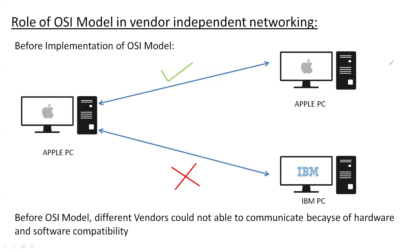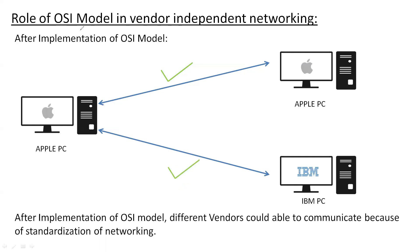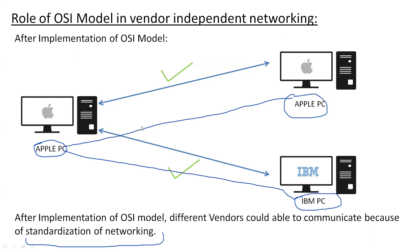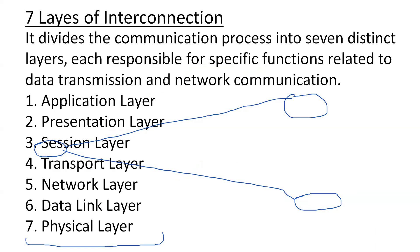After the implementation of the OSI model, the network was standardized, and the Apple PC could forward data to Apple as well as IBM PCs. That is the reason behind the implementation of the OSI model. With OSI, seven different layers of networking were introduced.